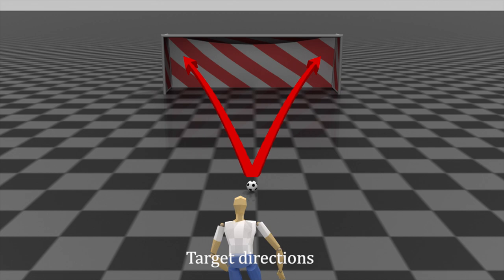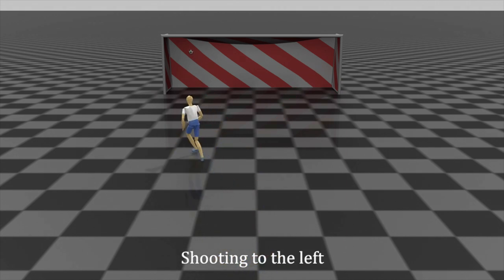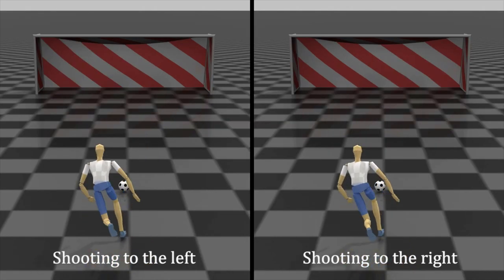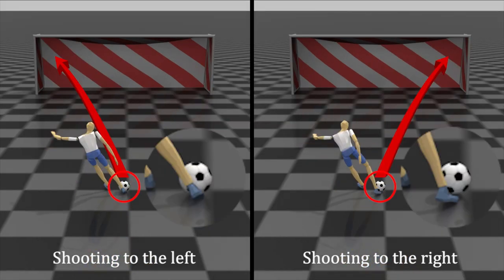Penalty kick to different directions. During penalty kicks, the character can kick the ball toward the given target direction. Notice that the swing leg faces the target direction at the moment of the kick.